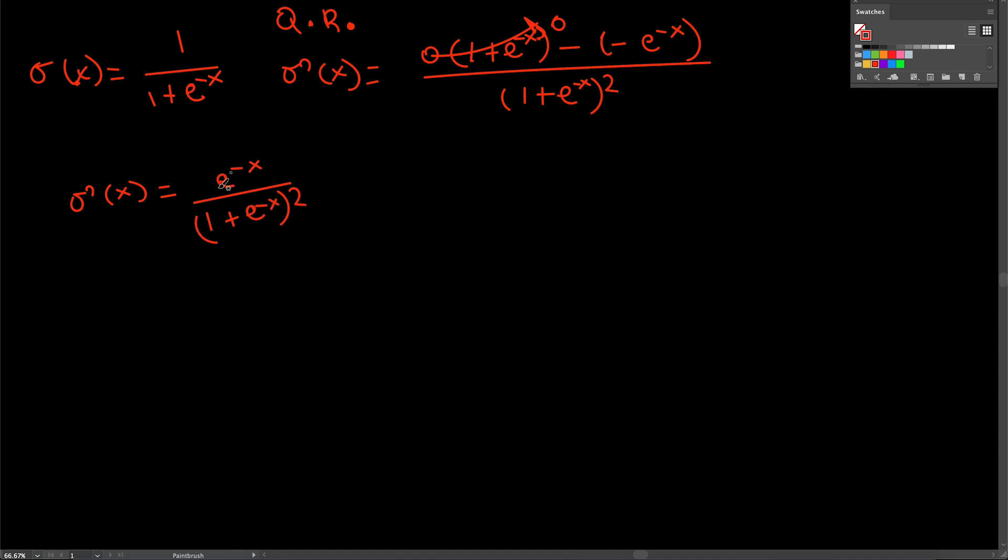Now this as it is is the derivative of the sigmoid function and that's fine. You could use that one, you could even program it with that one. But there is another way in which this is commonly expressed, especially when dealing with neural networks. And you have probably seen that the derivative of sigmoid can be expressed as the function of sigmoid itself. So it's going to be sigmoid of x times 1 minus sigmoid of x.